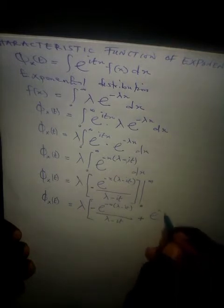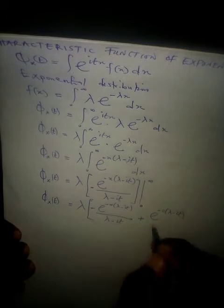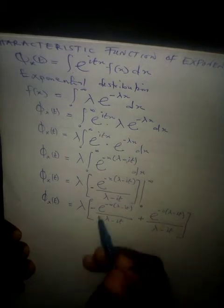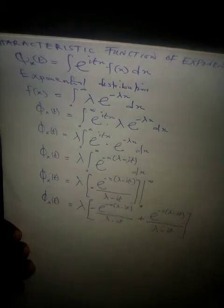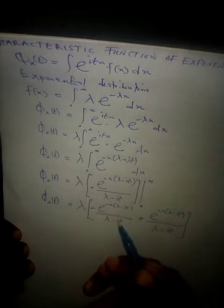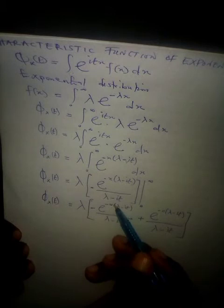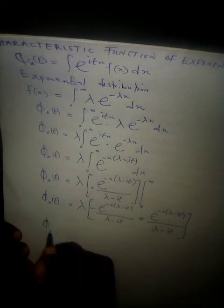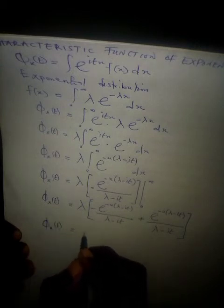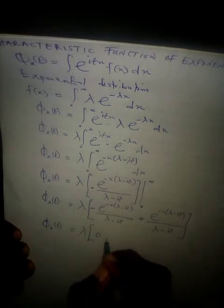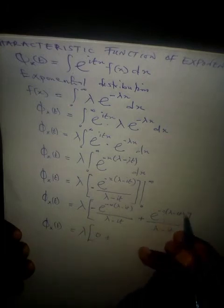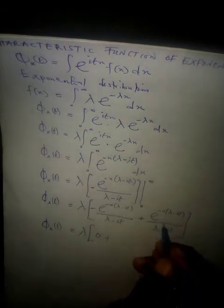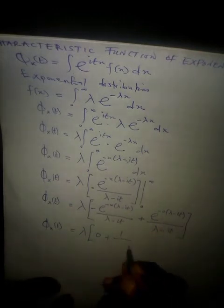Substituting zero: exponential raised to the power minus zero times the quantity lambda minus i theta t, divided by lambda minus i theta t. Exponential raised to the power infinity gives zero, so the infinity term vanishes. Exponential raised to the power zero equals one, so we get zero plus one over lambda minus i theta t.